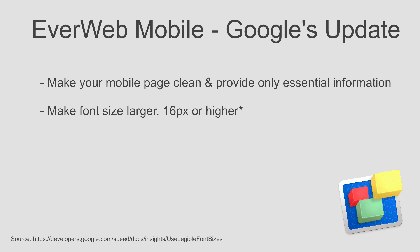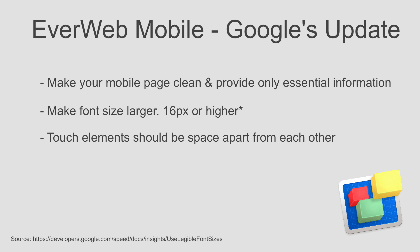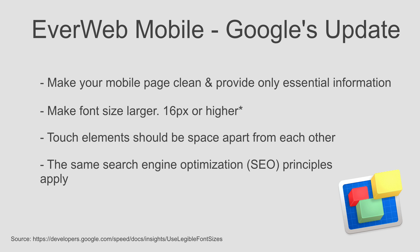Another thing to consider are touch elements on your mobile page. If you have touch elements such as links and buttons, make sure that they are spaced apart from each other. It is easy to hover the mouse over a link on a desktop computer, but not as easy when using your finger or thumb to click on something. The extra space will be important to ensure users do not click the wrong button or link by accident. In terms of SEO, the same principles for your desktop site will apply.